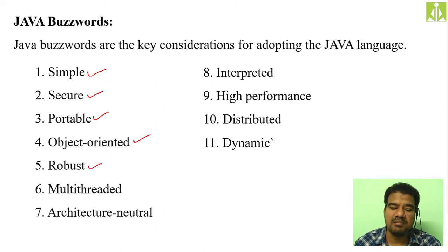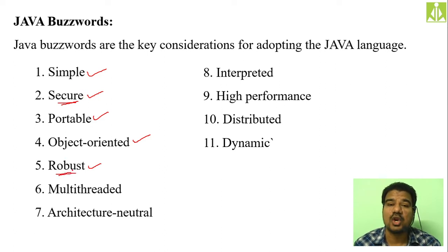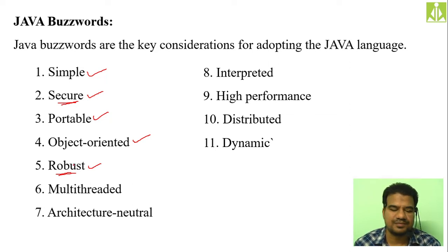Robust means unbreakable — in short, unbreakable. You cannot break the code written in Java because it is highly secured. As it is highly secured, it is very difficult to break the code in Java. That's the reason we call Java a robust programming language — it is very difficult to hack the code written in Java.